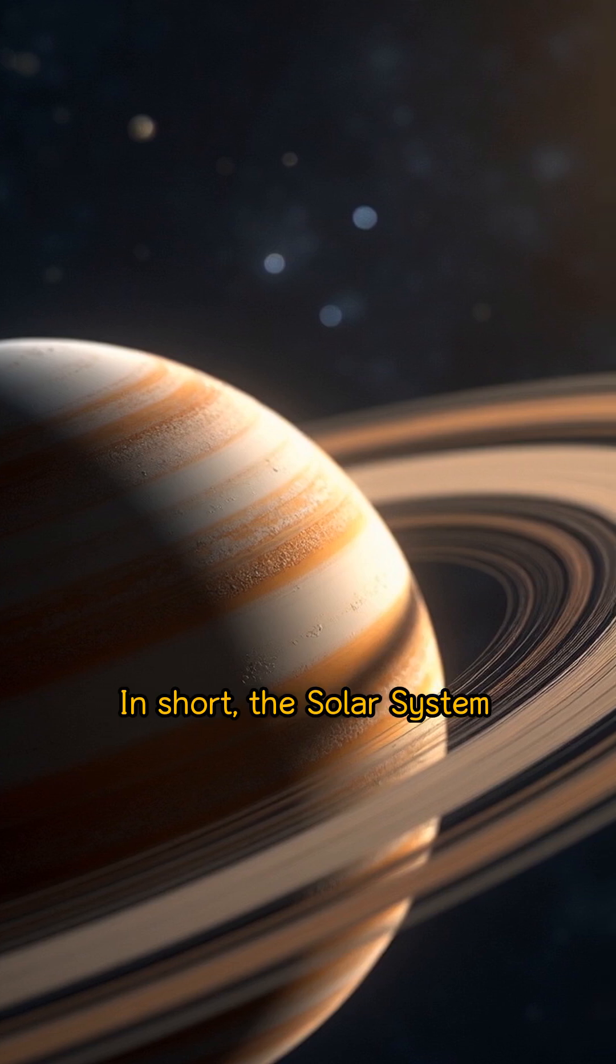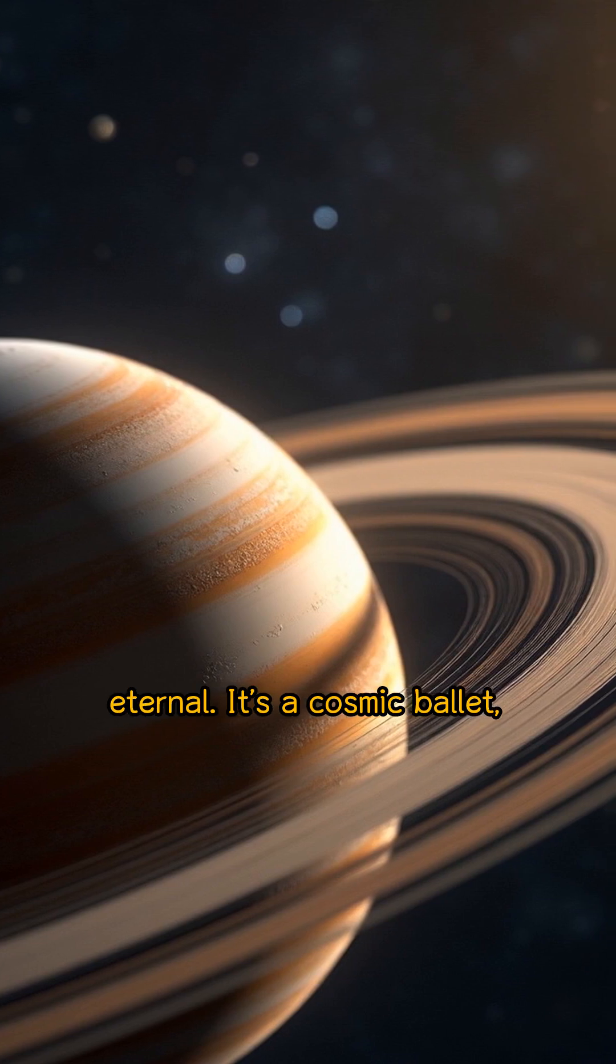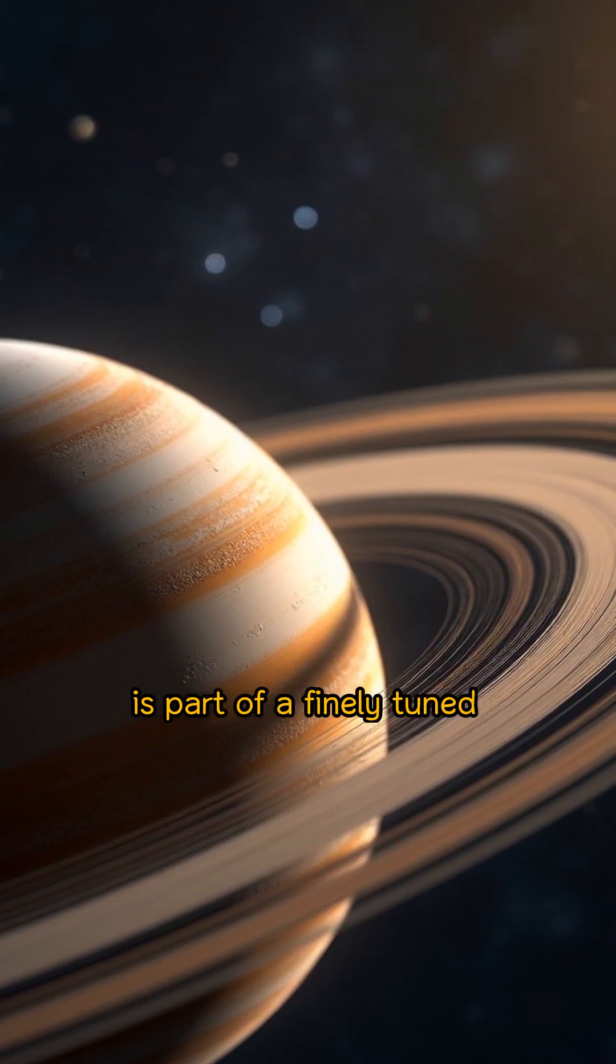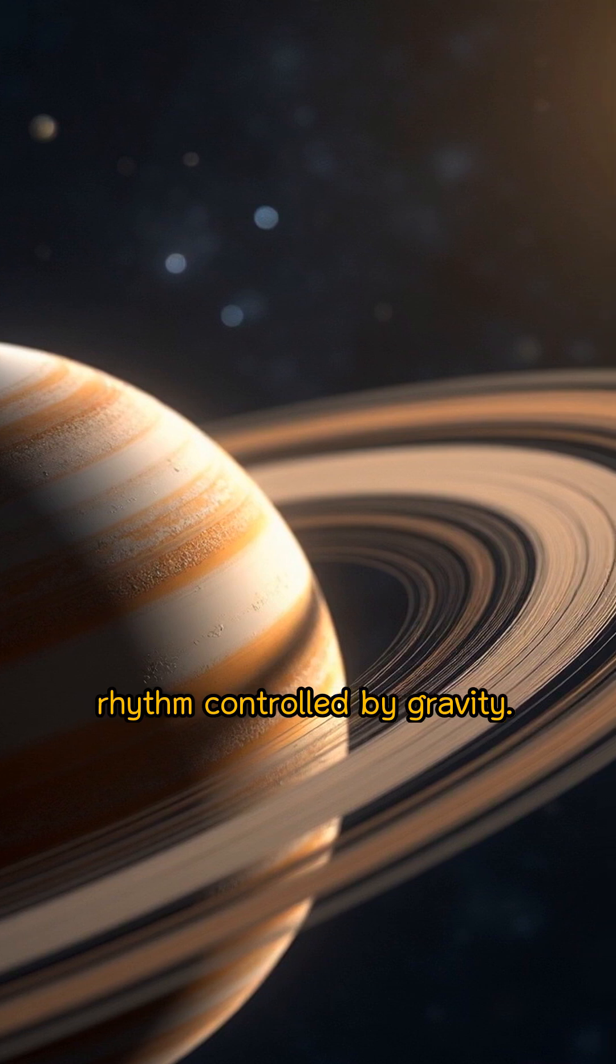In short, the solar system is mostly stable but not perfectly eternal. It's a cosmic ballet, where every planet's motion is part of a finely tuned rhythm controlled by gravity.